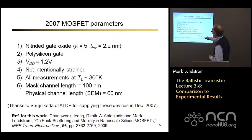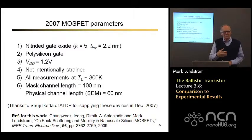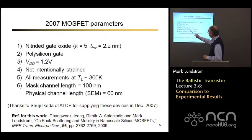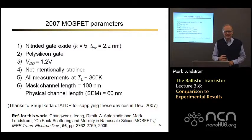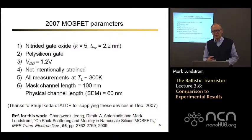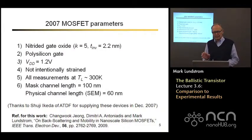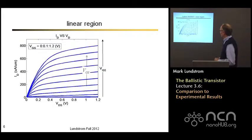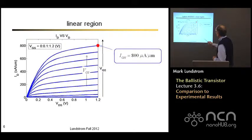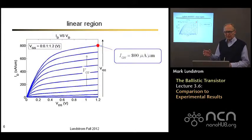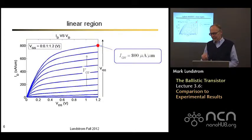Let's take a recent MOSFET for which we have some data. This device has key parameters: the oxide is not quite as thin as in today's transistors, it has a polysilicon gate, a drain voltage of 1.2 volts, and it did not intentionally use strain, so it doesn't have quite as high currents as the most recent devices. All measurements were done at room temperature. The device had a physical channel length determined by scanning electron microscope to be 60 nanometers. The measured IV characteristics show an on-current of about 800 microamps per micrometer of width.